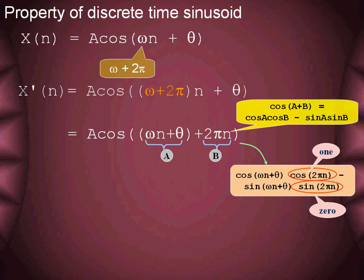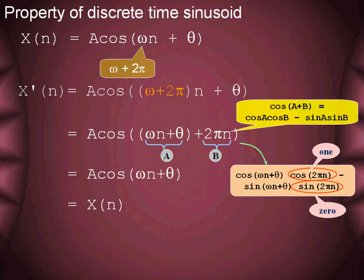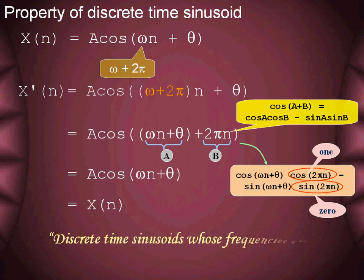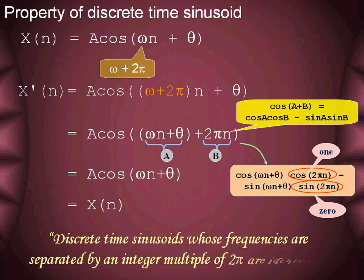Applying the cos(a + b) mathematical identity, we observe that sin of integer multiples of 2π is 0, whereas cosine of integer multiples of 2π is 1. With these substitutions, the expression reduces back to the original discrete time signal. Thus, what we understand is that the frequency spectrum of discrete signals is periodic with a period of 2π. In other words, discrete time sinusoids whose frequencies are separated by an integer multiple of 2π are identical.